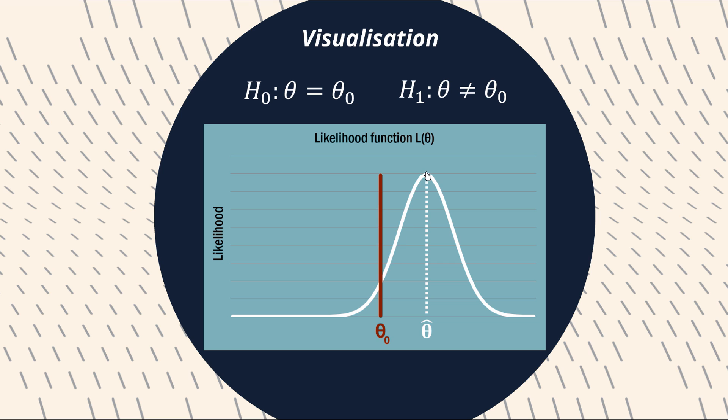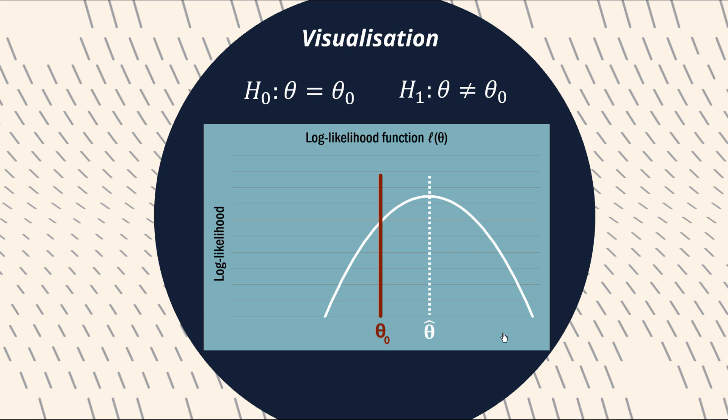But before we get there let's just appreciate that this might be a likelihood function. But for all the reasons mentioned in the previous videos we often like to log that function to form the log likelihood function. Now appreciating that it's a one-to-one function the point that maximizes this log likelihood is the same point that maximizes the likelihood function. So that hasn't changed nor has our task here assessing how extreme our maximum likelihood estimate theta hat is with reference to the null hypothesis.